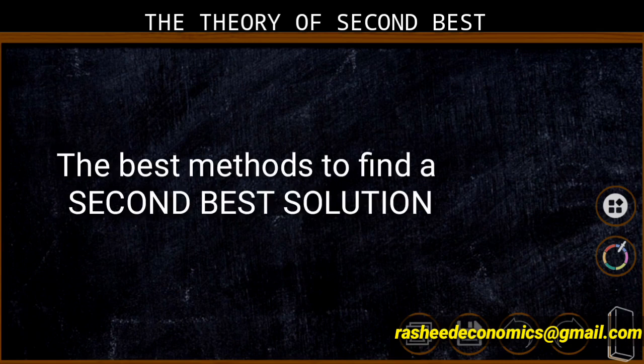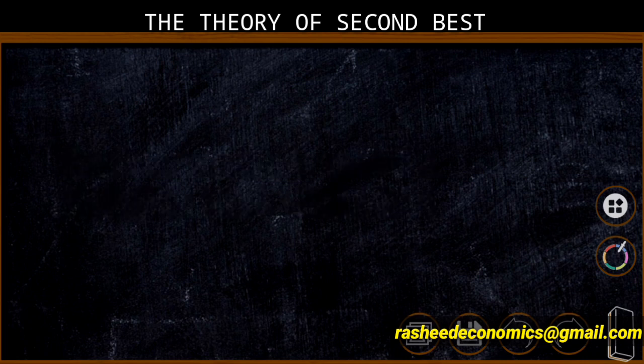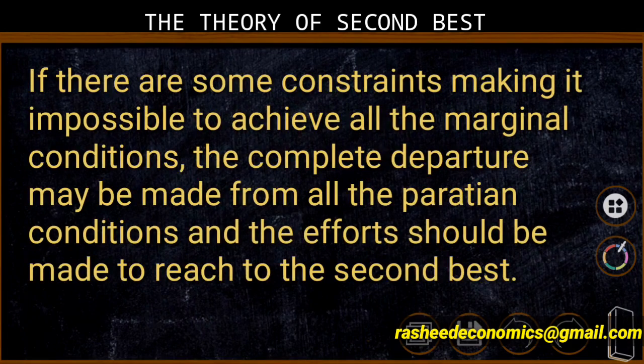The best method is to find a second best solution. In summary, the theory of second best states: if there are some constraints which make it impossible to achieve all marginal conditions, a complete departure may be made from all Pareto conditions and efforts should be made to reach the second best.